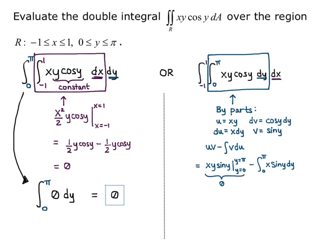So the xy sine y from y equals 0 to y equals pi comes out 0 because sine of pi is 0 and sine of 0 is 0. So I can ignore that part right there. It's just a 0. And then I get minus anti-derivative of x sine y with respect to y is negative x cosine y. And then evaluate it from y equals 0 to y equals pi. So the double negative becomes a positive. And I get x cosine pi minus x cosine 0. So that's negative x minus x, which is negative 2x.